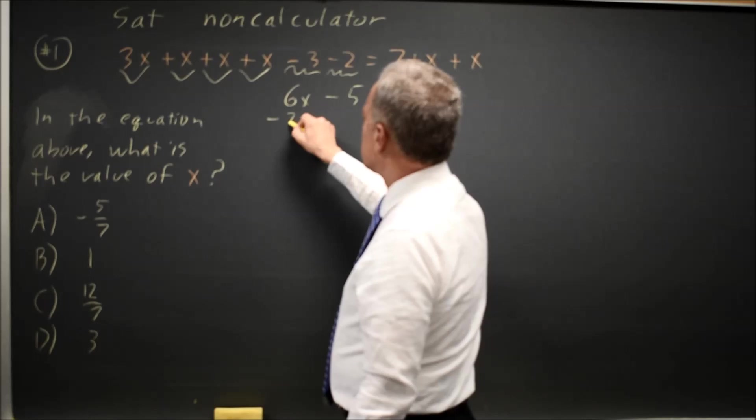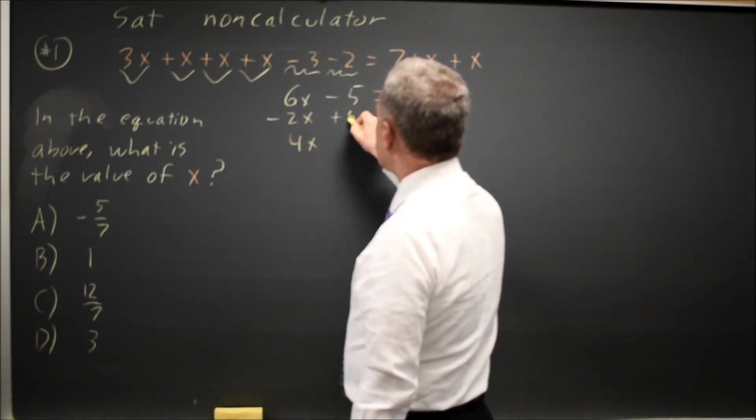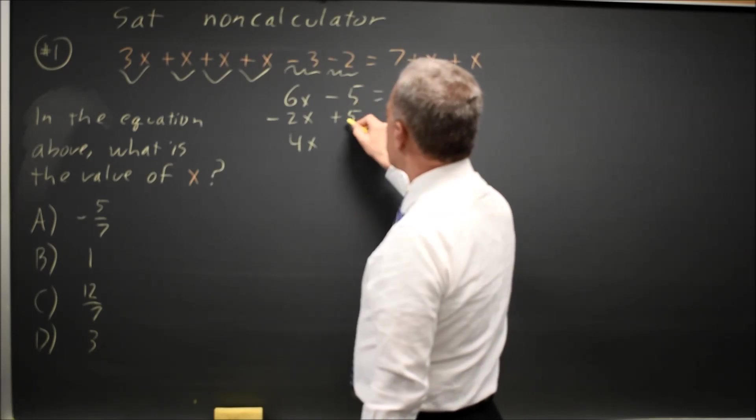Subtract 2x from both sides. 6x minus 2x is 4x. Add 5 to both sides. Negative 5 plus 5 is 0.